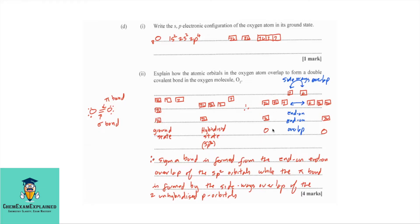This represents one oxygen atom with my hybridized oxygen, and another oxygen atom that is hybridized. The first bond, which is the sigma bond, is an end-on-end-on overlap, or you could say head-on-head-on overlap as well. The second bond comes from the p orbitals overlapping sideways. The sigma bond is formed from the end-on-end-on overlap of the sp2 orbitals, while the pi bond is formed by the sideways overlap of the two unhybridized p orbitals.